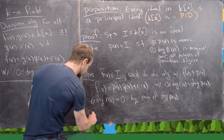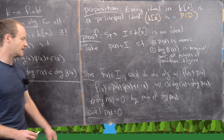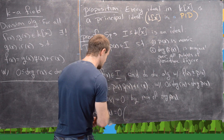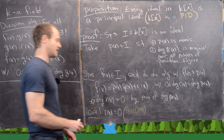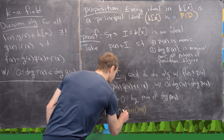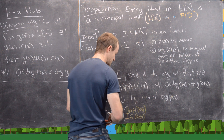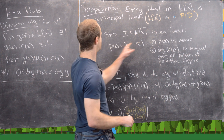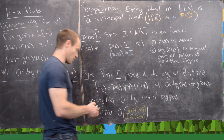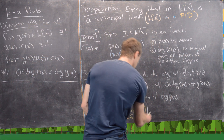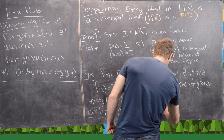We have two cases. Case number one is that R(x) is the zero polynomial. In this case, we're done because this immediately implies that F(x) is inside the principal ideal generated by P(x). Since F(x) was chosen arbitrarily, that means I is contained within the principal ideal generated by P(x). But since P(x) is in I, we immediately know that that principal ideal is a sub-ideal of I.